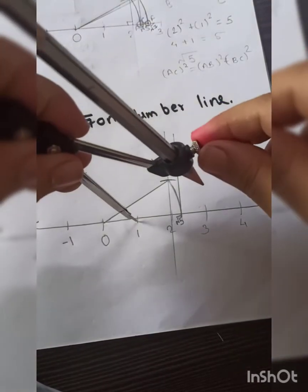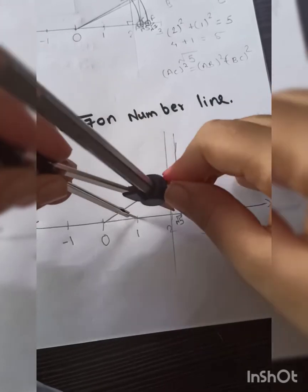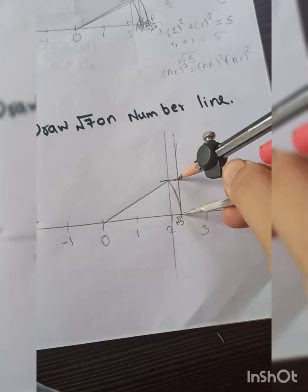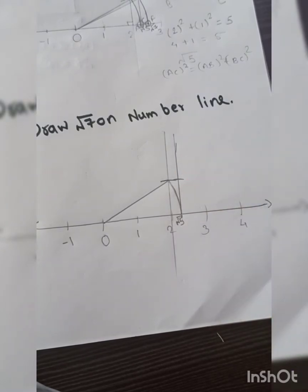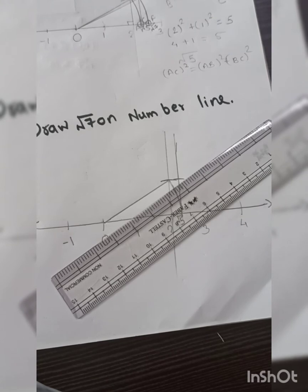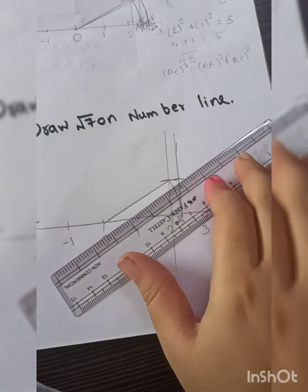Now same process you are going to repeat. Take one unit distance. This type of construction is a little hard to understand in online classes, that is why I decided I will do it. Now join this with the center - that is O, or you can take it as 0 also.